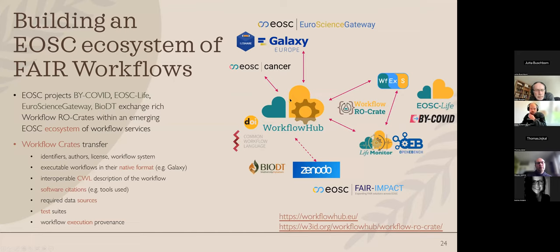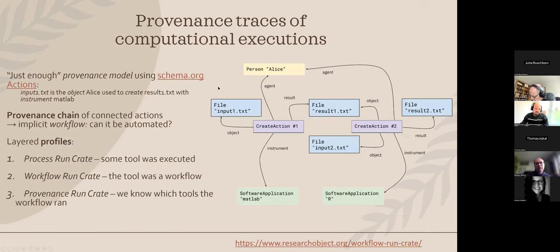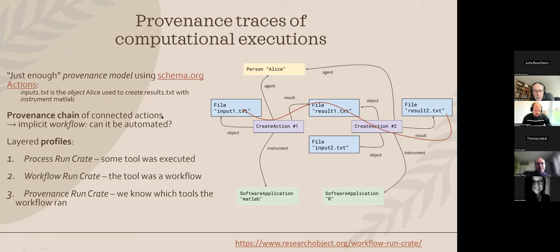One project close to my heart is the Workflow Hub, which we run from Manchester. Here the main entity is a workflow — a program you can execute — and you need a certain engine to run it, so there's lots of context around the workflow. That's what we capture in the workflow crate. There's a type of RO-Crate mainly focused on workflows that fits into an ecosystem, where the crate is a unit of exchange — for publishing in the hub but also for things happening during execution time. During execution time we try to capture the provenance, fairly lightweight: if you follow the red arrow, you can see the provenance chain emerging from the final results and going back to the individual steps of the workflow.